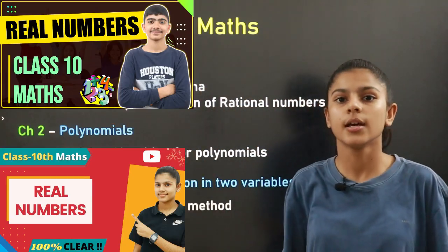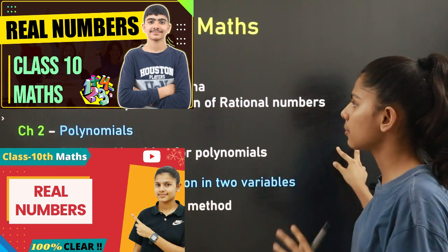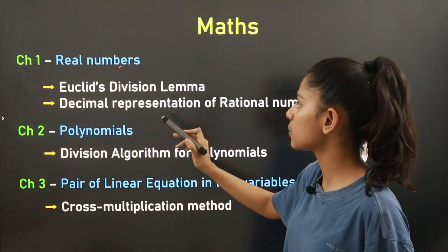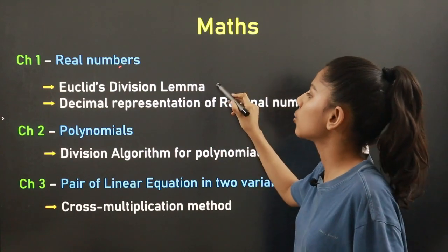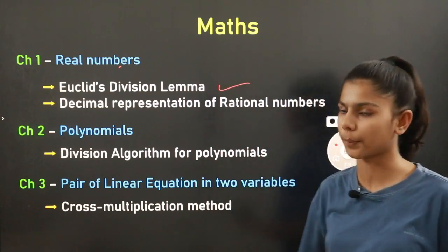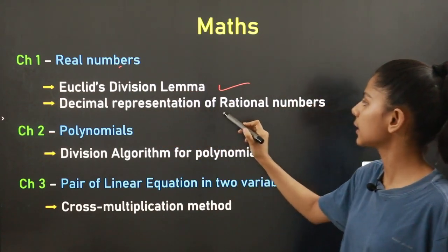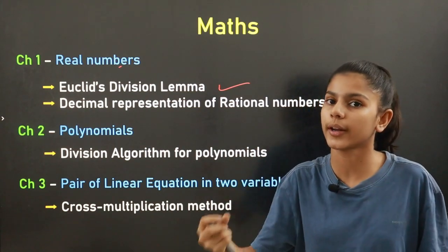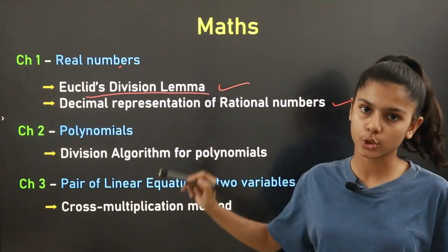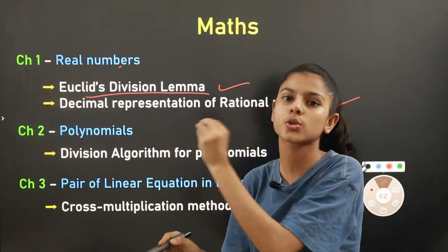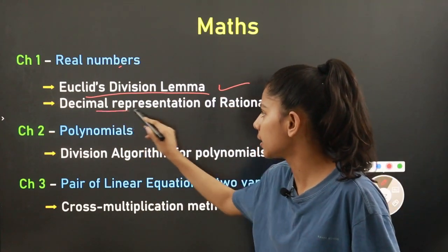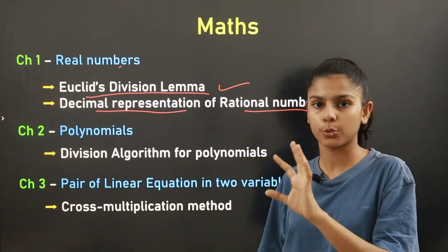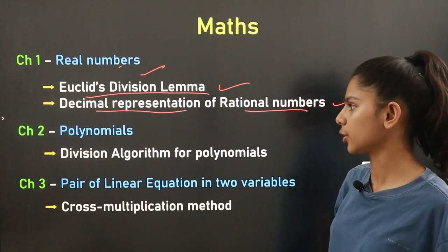The first chapter is Real Numbers. Two topics have been reduced from this chapter. The first one is Euclid's Division Lemma — exercise 1.1 covers the whole Euclid's Division Lemma and it has been reduced. The second topic is Decimal Representation of Rational Numbers, covering terminating and non-terminating numbers. That whole part has been reduced from Real Numbers.